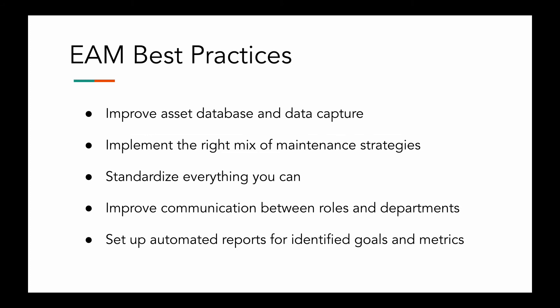Fourth, improve communication between roles and departments. Assets go through many different hands throughout their lifecycle, so you need a good information flow. Machine operators need an easy way to report asset issues, maintenance managers must schedule and coordinate work between technicians, and inventory managers need timely notifications to create emergency work orders or cancel automated purchases. EAM with mobile capabilities makes a huge difference in team communication. Finally, set up automated reports for identified goals and metrics. Defining your asset management KPIs is the only path to progressive and sustainable improvement — organizations that can't accurately track performance indicators often focus too much on cost alone, which doesn't tell you everything.